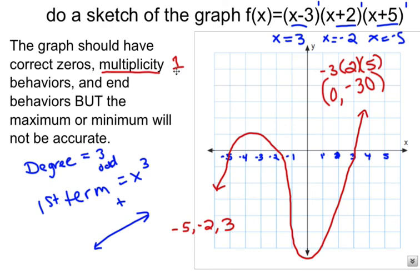If it had an even multiplicity, it would bounce, which we'll talk about in the next one.